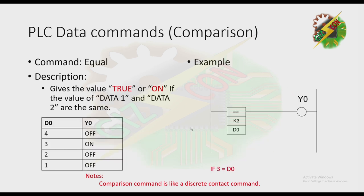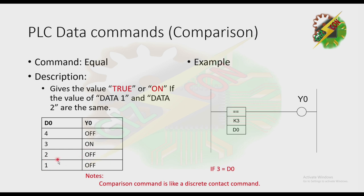In the example, the command '== K3 D0' means: if 3 is equal to D0, the value is true and Y0 will turn on. From the table: if D0 is 4, it is not equal to 3 so Y0 is off; if D0 is 3, they match so Y0 is on; if D0 is 2, Y0 is off; and if D0 is 1, Y0 is off.